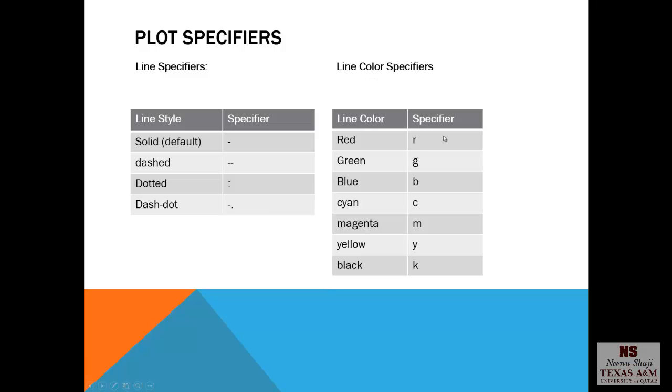For line color specifiers, if you want to change the color of your line, the default color is blue. So for black, we have the letter k, yellow y, magenta m, cyan c, red r, and green g.